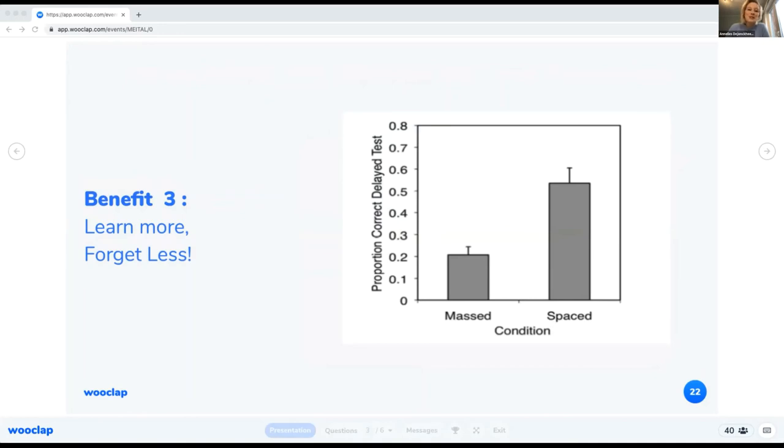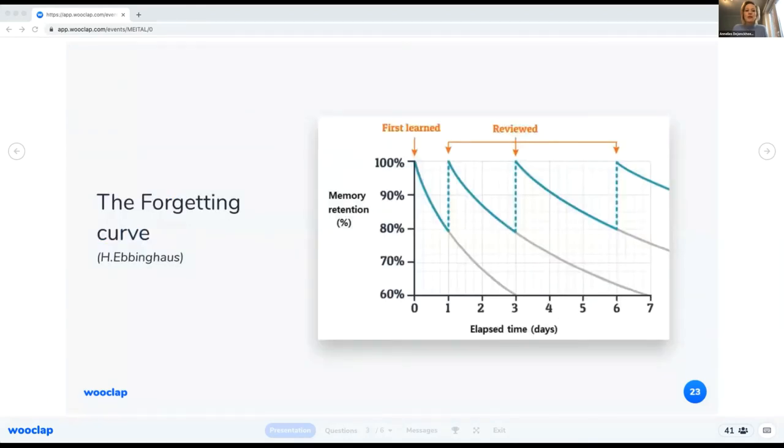All right, a third benefit to space your study periods is that you learn more and you forget less. In the Cornell experiment in 2009, we had two groups of students that were compared. On the x-axis you have the condition, so mass versus space. And on the y-axis you have the proportion of information the students were able to recall when they took a test. And the materials were over 40 synonyms.